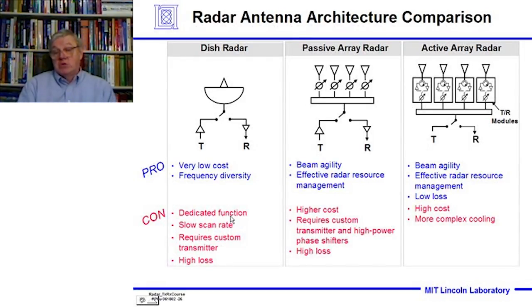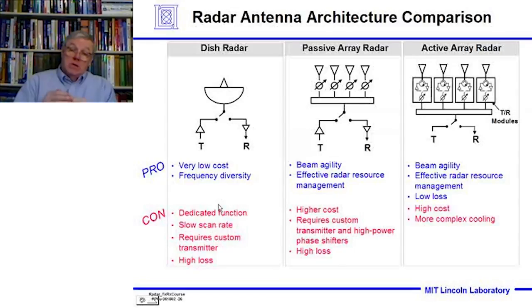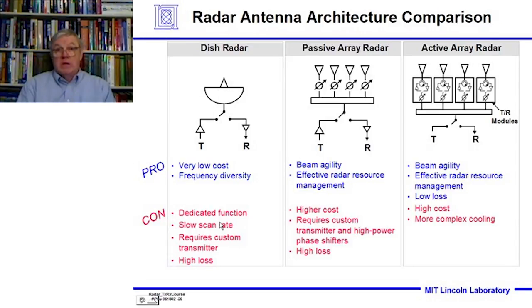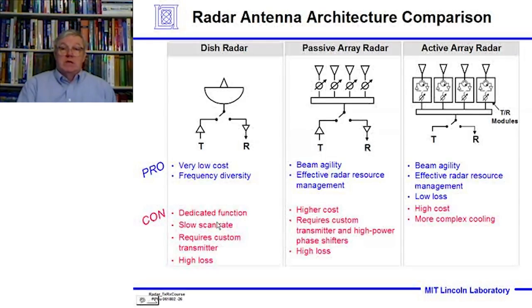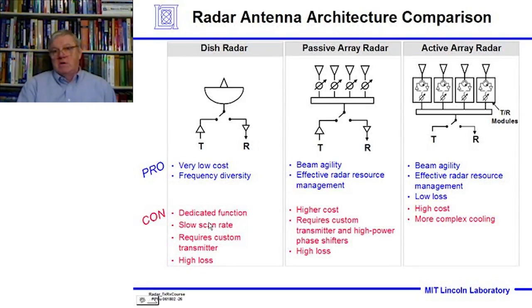The cons of dish radars are they have a dedicated function — they're going to do one target at a time, at one angle they'll be pointing, with a slow scan rate. If you've got a target straight ahead and another target 30 degrees away, some of those big antennas have a huge amount of inertia. It takes giant torque motors to move them, and there's a finite time to move all that mass gracefully without grinding the gears and destroying them. You can't have infinite accelerations or infinite torques. You're also going to need a custom transmitter, and there are pretty high losses — the highest losses of any architecture.